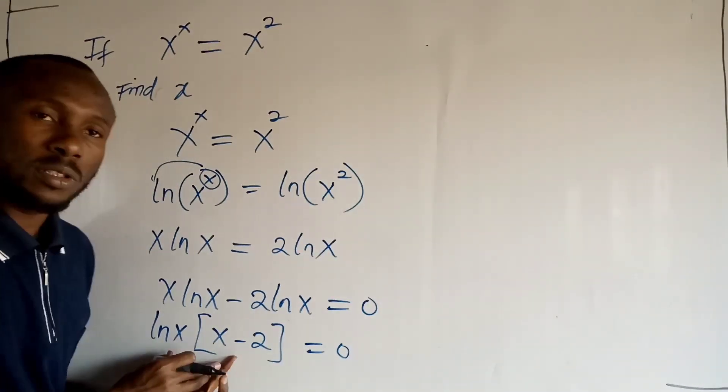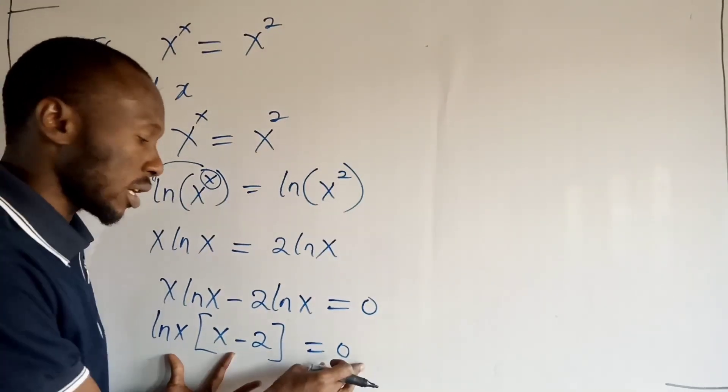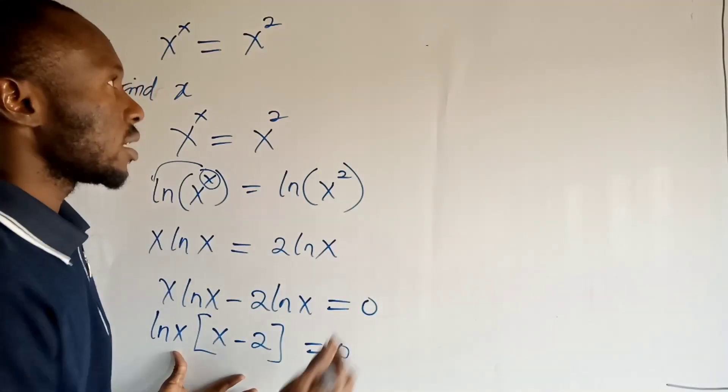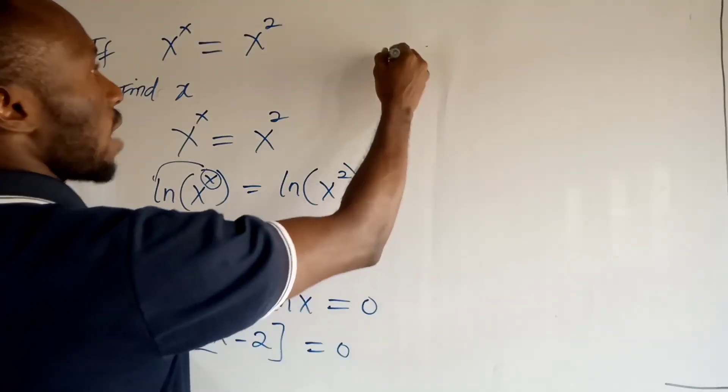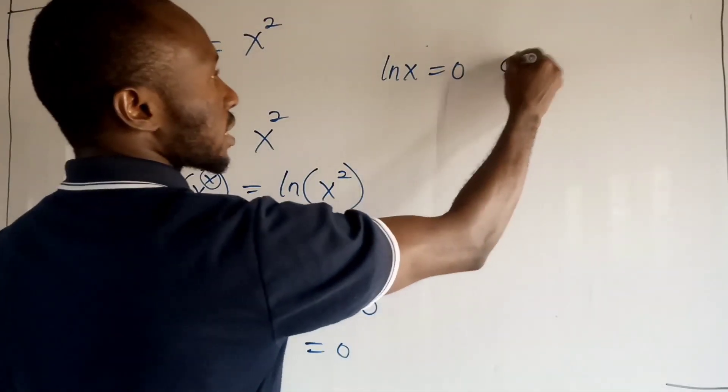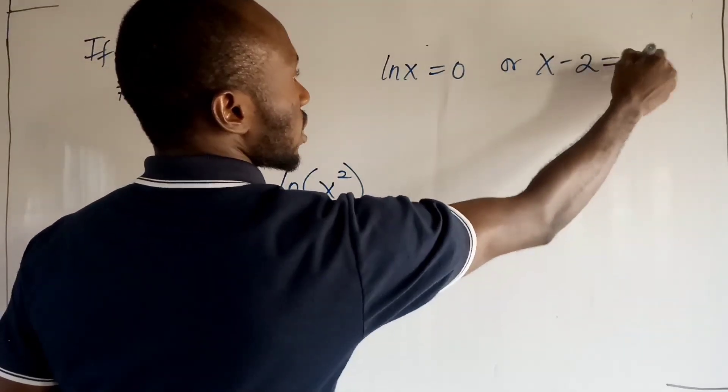Now you can see that we have the product of 2 factors equal to 0. It means that we are going to equate each of these factors to 0, right? So I am going to equate this to 0. So I have ln x is equal to 0 or I will equate x minus 2 is equal to 0.